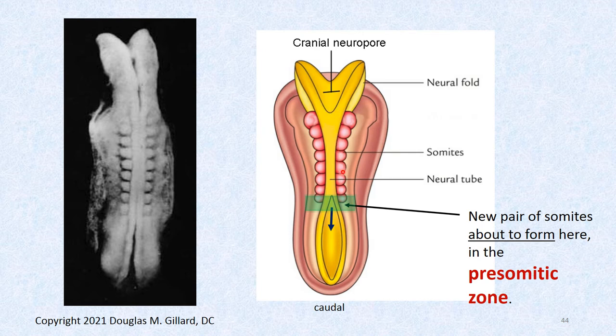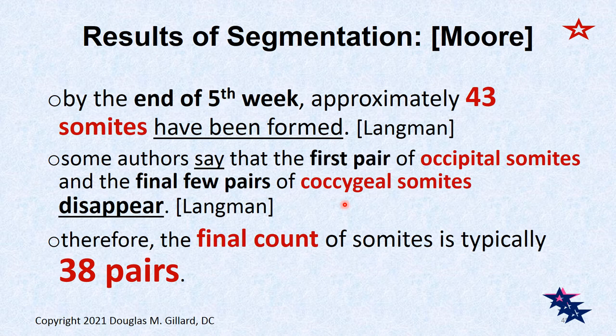The neural tube story is going on at the same time — the neural pores are closing at about the same rate that somites are forming. By the end of the fifth week we have about 43 somites formed. Some authors like Langman say the first pair of occipital somites actually disappear, and a few of the coccygeal somites disappear, so the final count according to Langman for chiropractors is 38 pairs of somites.